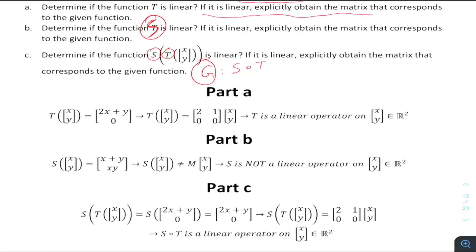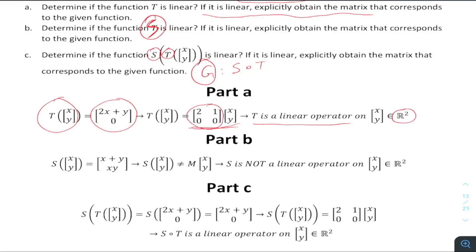Let's focus on Part A. Looking at the T matrix: all entries are linear, so we can write T in the form of a matrix times the given vector. We conclude that T is a linear operator on the vector space R², and this is the matrix that corresponds to that linear operator.